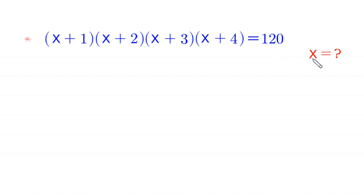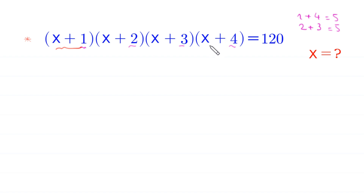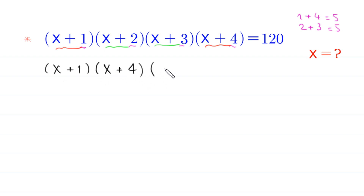Let's start. Since 1+4=5 and 2+3=5, we combine these two pairs: (x+1) with (x+4), and (x+2) with (x+3). So this becomes (x+1)(x+4) times (x+2)(x+3) = 120.